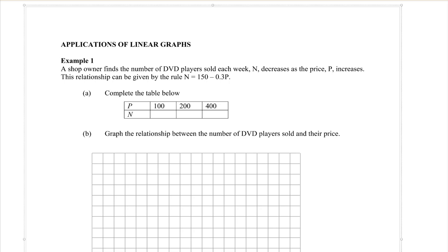It goes straight into the example because each question will just be slightly different. This first example says a shop owner finds the number of DVD players sold each week, N, so N represents the number sold. This number decreases as the price which is called P increases, which makes sense. If you put the price up in the shop less people are going to buy it, right? This relationship is given by the rule N equals 150 minus 0.3P, right there on your page.